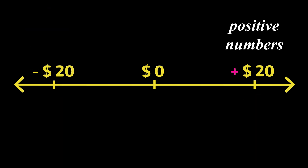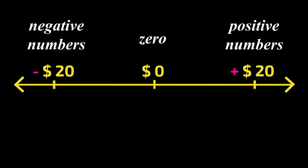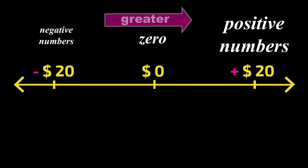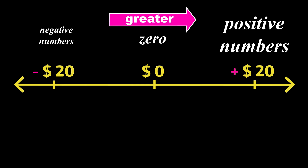On this number line, positive numbers are on the right side, 0 is in the middle, and the negative numbers are on the left side. Since positive numbers are greater than 0, and they're greater than negative numbers, the greater numbers are further to the right.